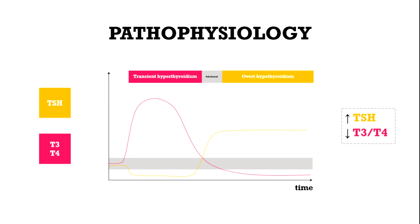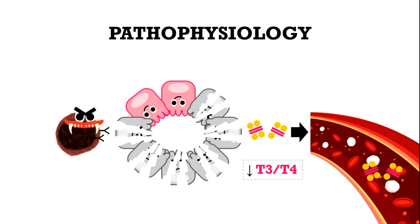Overt hypothyroidism is the last stage where high levels of TSH are not able to reach normal T3 and T4 levels, which is the consequence of the destruction of most of the follicular cells that makes T3 and T4 not available anymore.